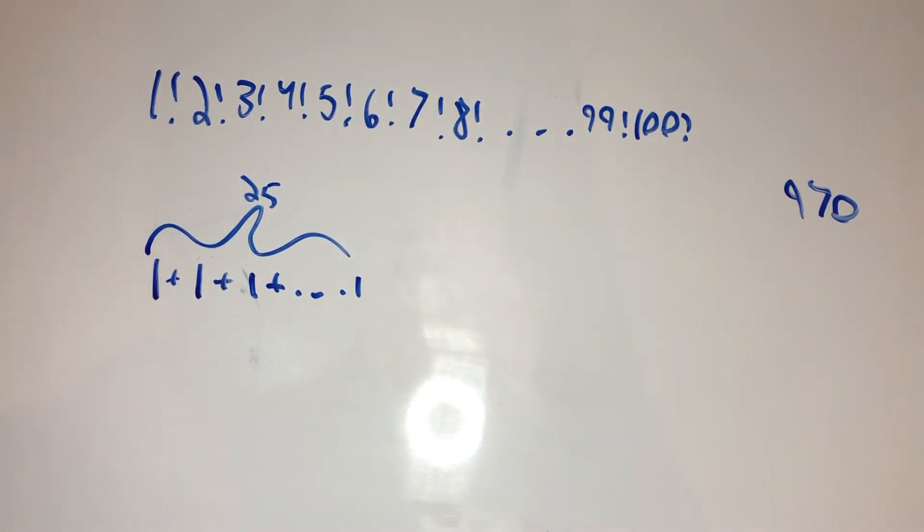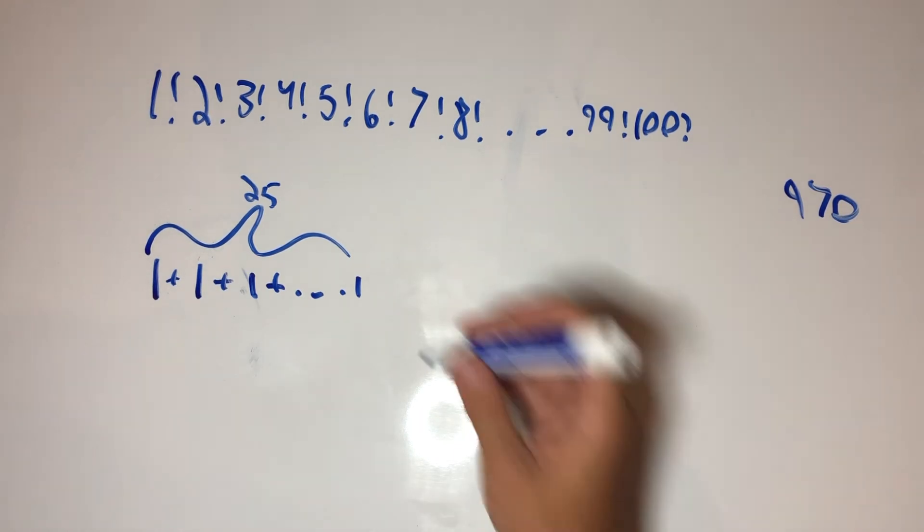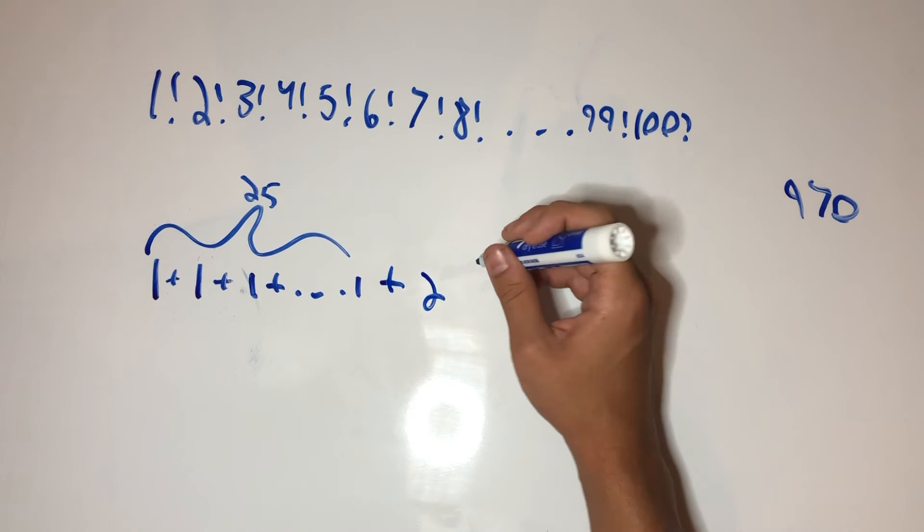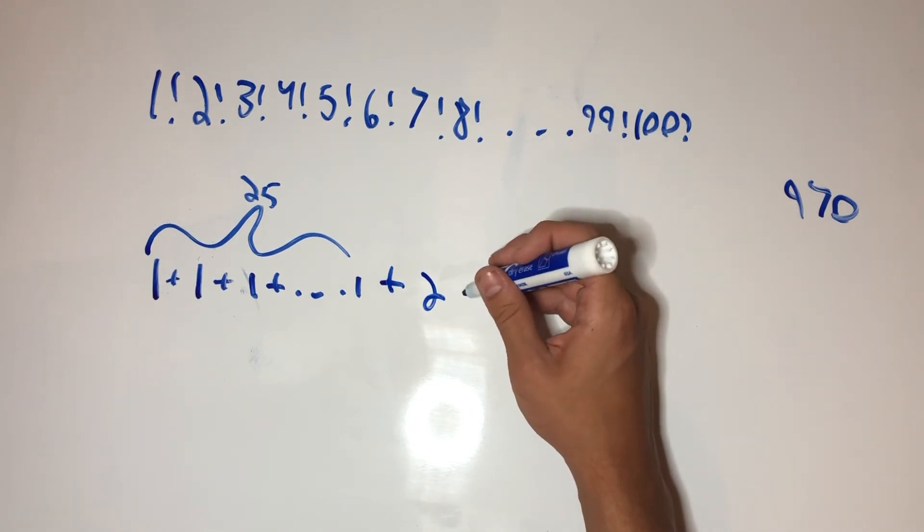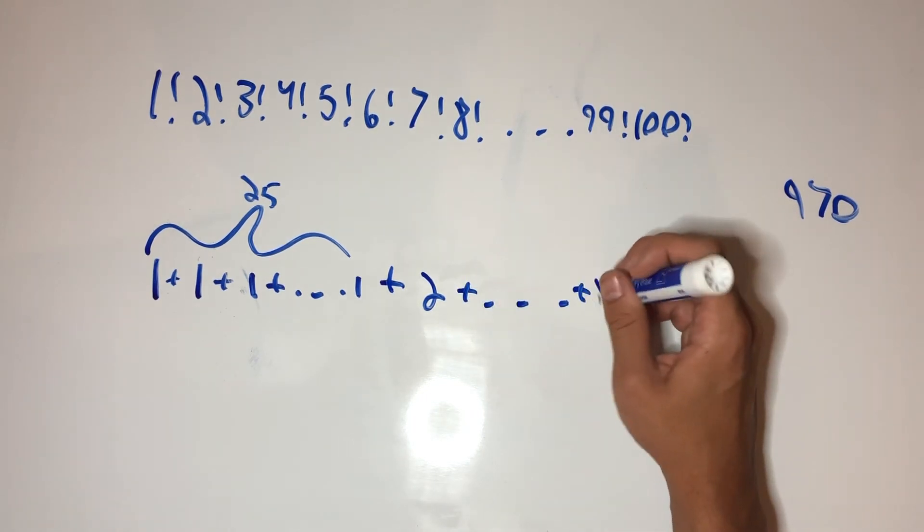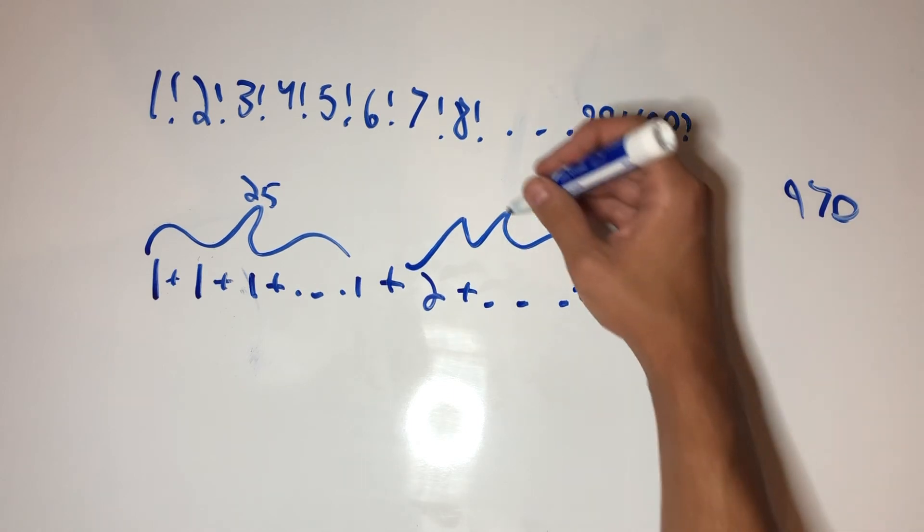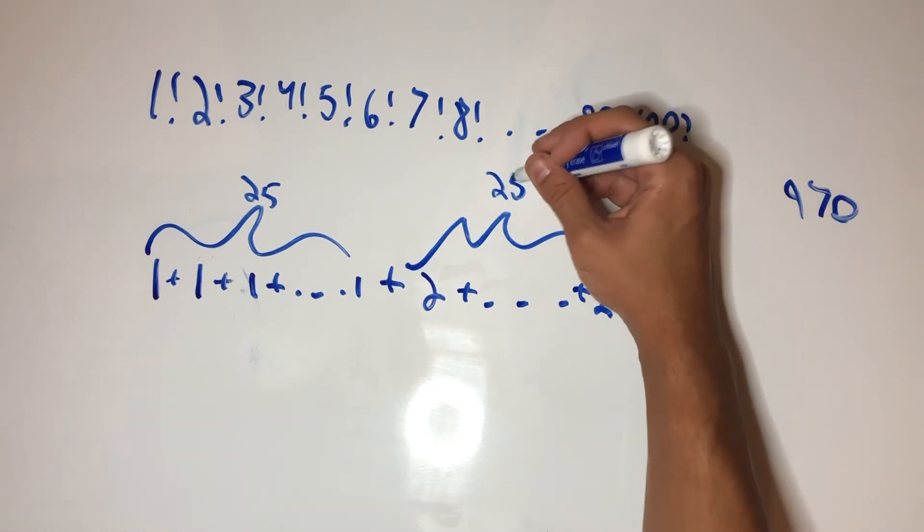And now, for 50, there's two factors of 25 in 50 factorial, for the first 25 and for 50. So, we're going to have plus 2 for another 50 up until we get to 75. So, that's a terrible bracket, but another 25.